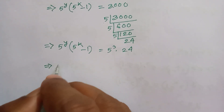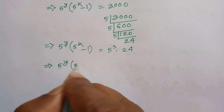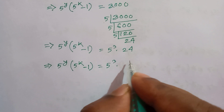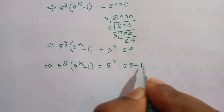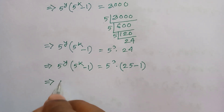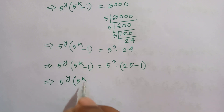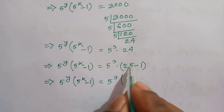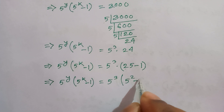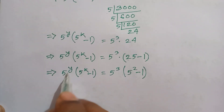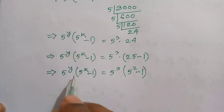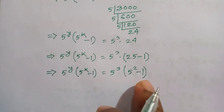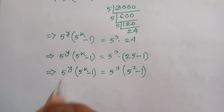So we have 5 to the power y times 5 to the power k minus 1, equal to 5 cubed times 24. Now 24 can also be written as 5 squared minus 1. Comparing the left side and right side of the equation, we can identify the values.